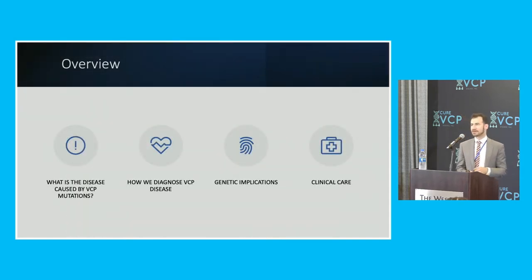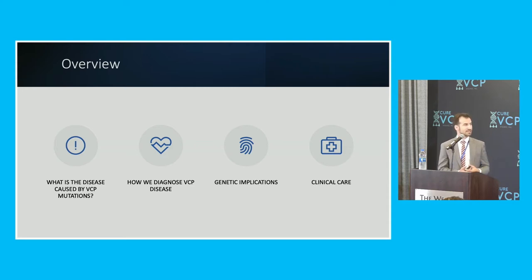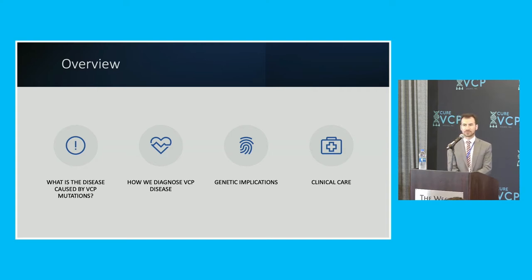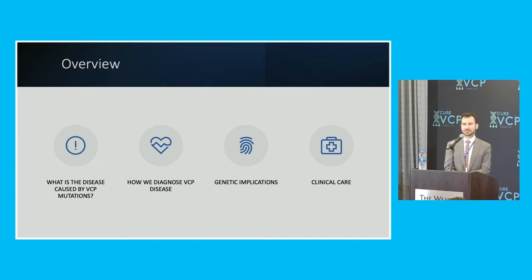Just to give an overview of what I will be talking about today — apologies if there isn't too much visibility for people in the back, I will try to read things out loud. I'll start by talking about what is the disease caused by VCP mutations, then how we diagnose VCP disease, some genetic implications, and finally clinical care. Afterward, this will be complemented by Dr. Weil, who will discuss VCP in the cell, and Dr. Pinden, who will lead the way talking about future therapies.